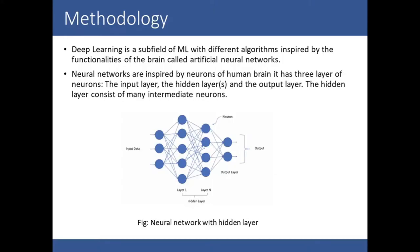Deep learning is a subset of machine learning with algorithms inspired by the functionalities of the brain, called artificial neural networks. Neural networks are inspired by neurons of the human brain. A neural network has three layers: the input layer, the hidden layer, and the output layer. The hidden layer consists of many intermediate neurons. As seen in the image, we have an input layer, multiple hidden layers (layer 1, 2, through layer n), and each round shape represents a single neuron. The last layer is the output layer, where we get the outputs.